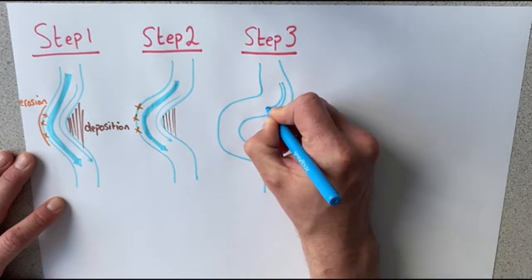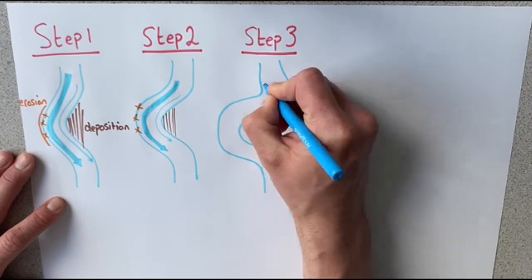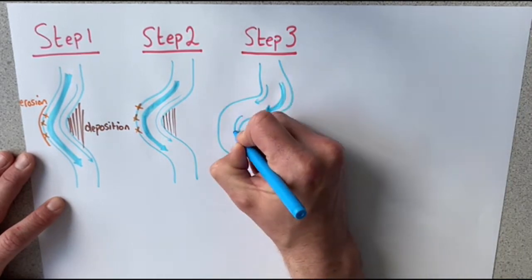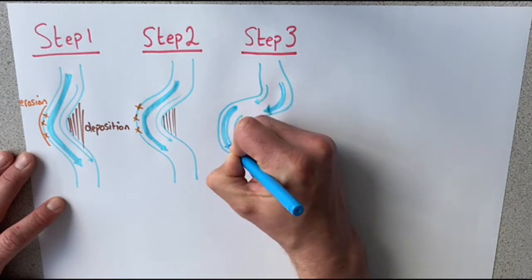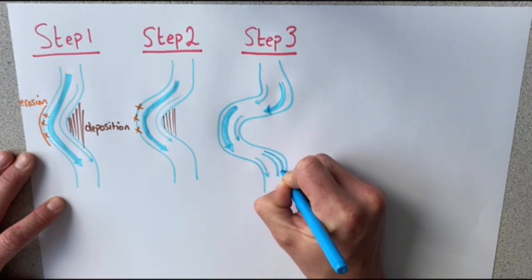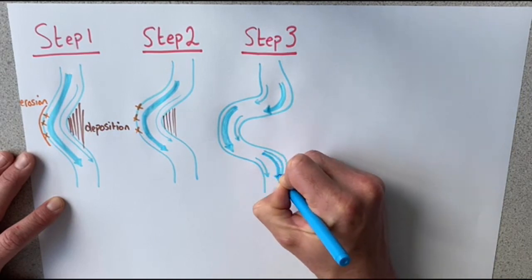This is taking place because we have more erosion still on the outside bank where the energy is greater and more deposition occurring on the inside banks where the energy is less and the river's velocity is slower.